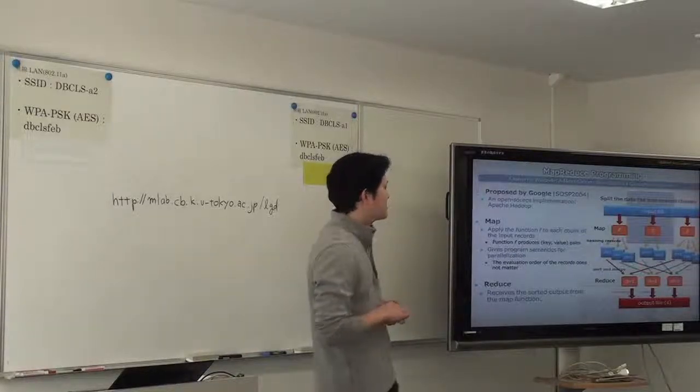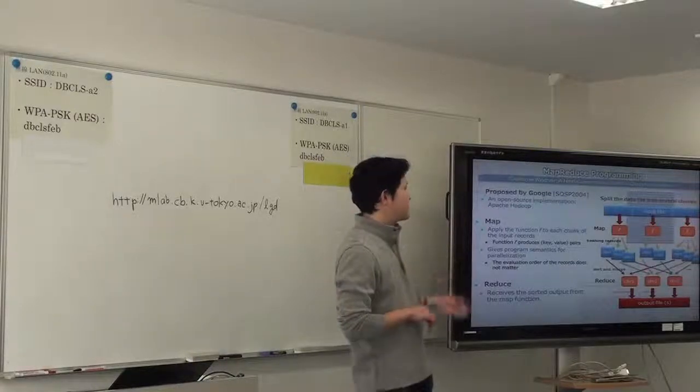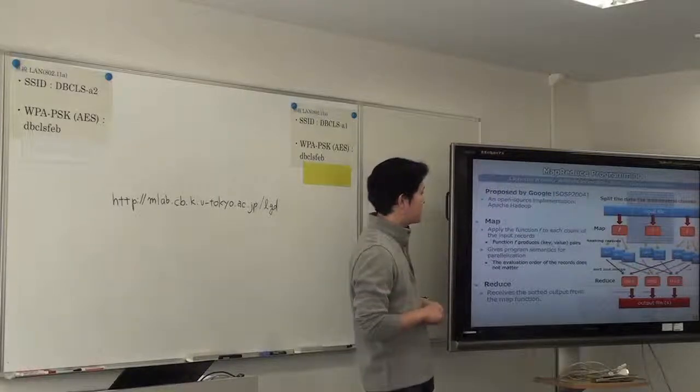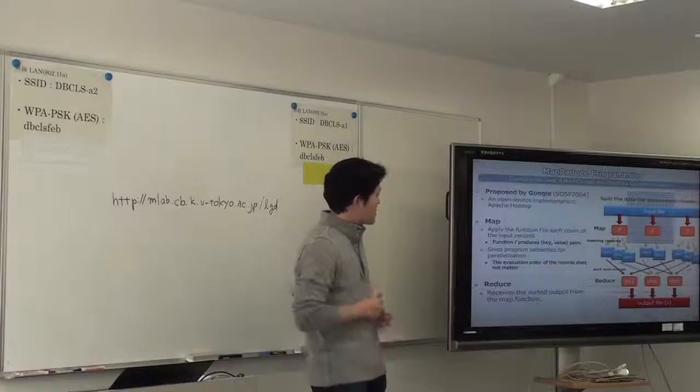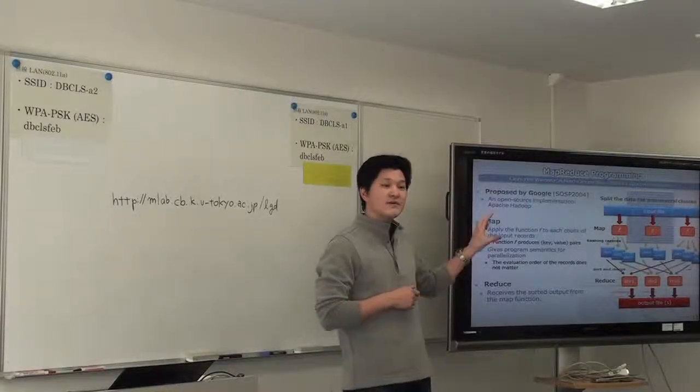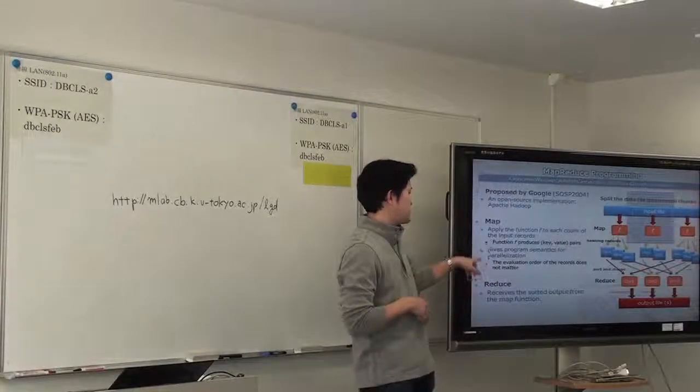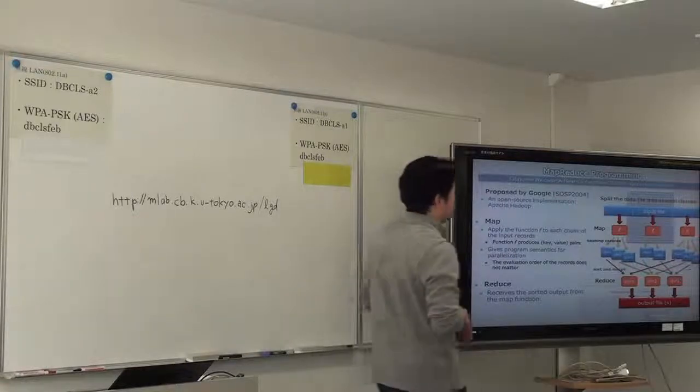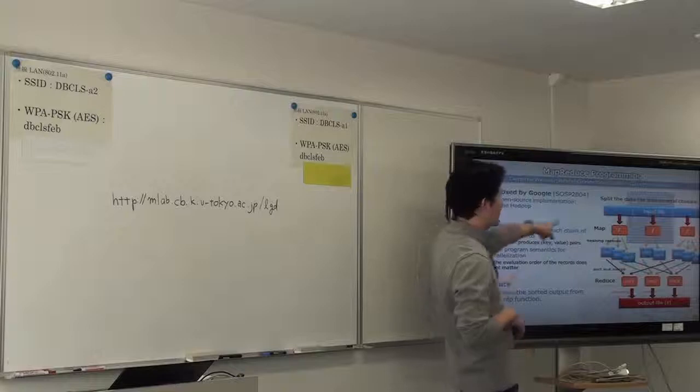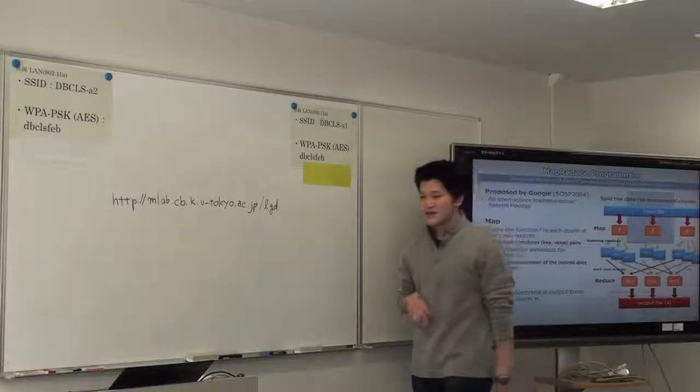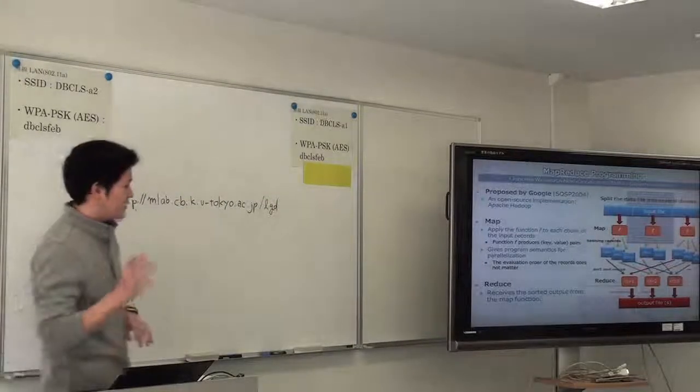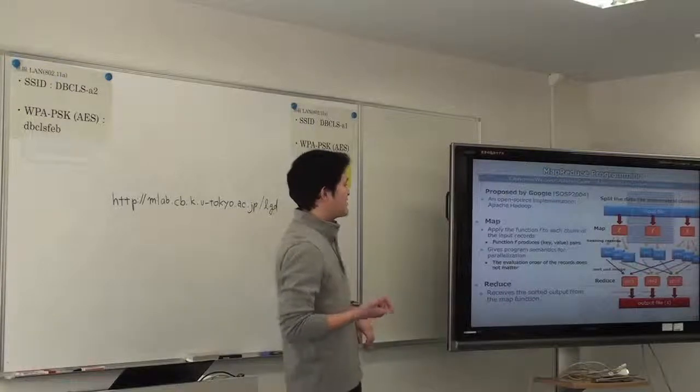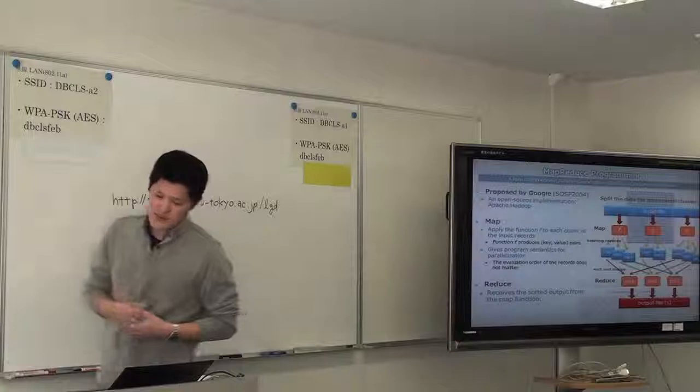And the function F produces, have to produce key and value pairs. For example, in genome alignment, the key should be chromosome name and start position. And in this way you can sort the data according to position during shuffle phase. And what is important in MAP phase is to give some program semantics. The evaluation order of each function doesn't matter. So in the simplest case, you can evaluate the input file from the top to end. But if you use MAP function, you are saying input file can be split into several pieces. And you can apply MAP function F to each piece of the data individually.